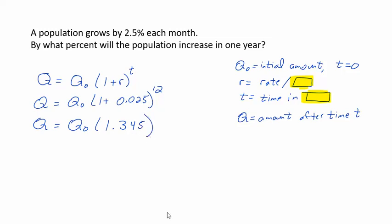So what is this telling me right here? This is telling me that whatever my initial population is, I'm gonna multiply that by 1.345 to get my new population. So that tells me that my new amount, my new population, is gonna be 34.5% more, or increase, because this 100%, this 1 is representing your 100%, and this is the amount of increase.